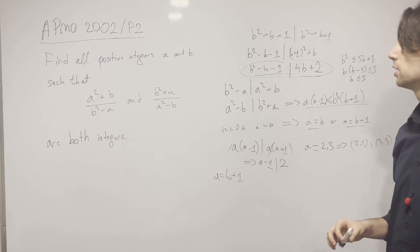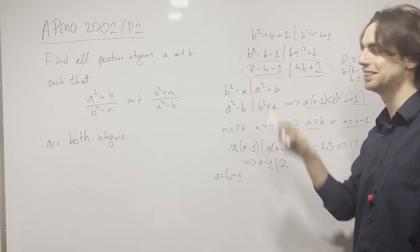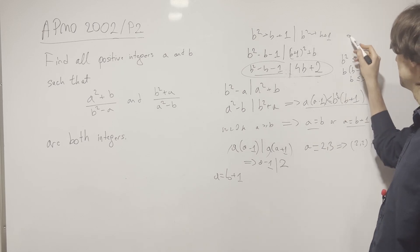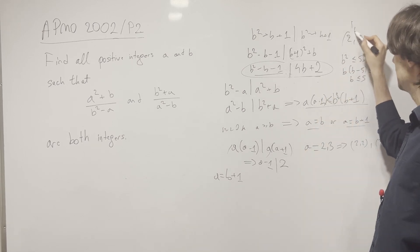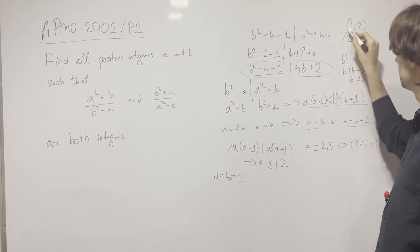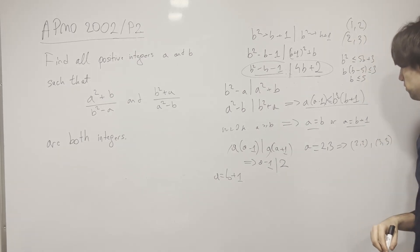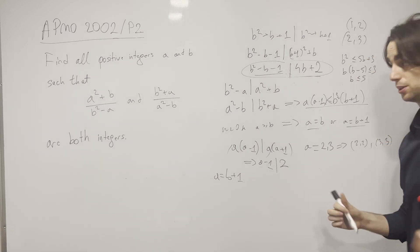Two gives us a 1 on this side, so it has to work out. So (2,3) is a solution. And for 1, we also have it works out. So (1,2) is also a solution. And then the solutions are (1,2), (2,3), (2,1), (2,2), (3,3), and (3,2).